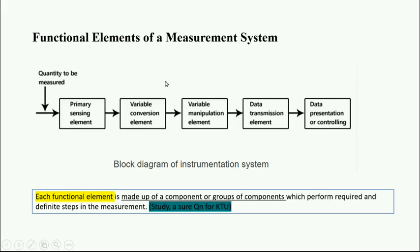This is the block diagram you must use for your examination. This is very simple. This is quantity to be measured - it can be pressure, temperature, or light intensity, etc. That is the physical quantity to be measured. Followed by primary sensing element, then variable conversion element, then variable manipulation element, data transmission element, and data presentation and controlling.